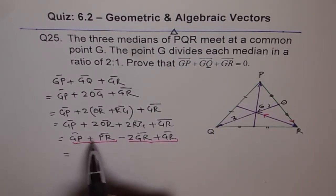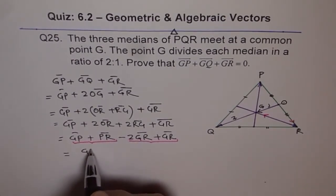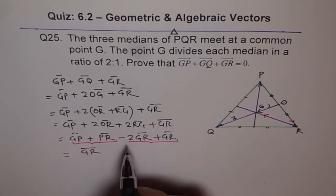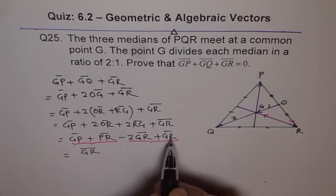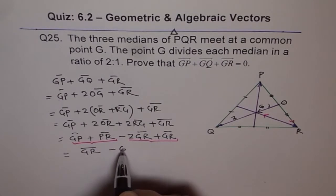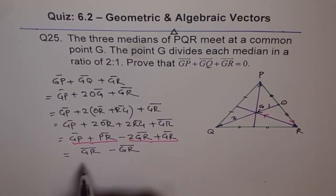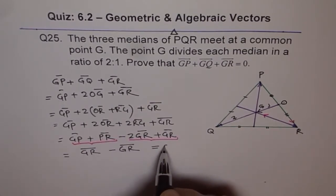So GP plus PR will give us GR. Now, minus 2GR plus GR will give us minus GR. So GR minus GR is 0. So therefore, we have proved that GP plus GQ plus GR is equal to 0.